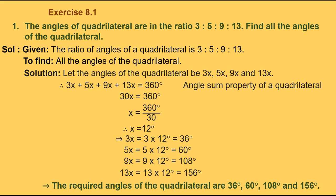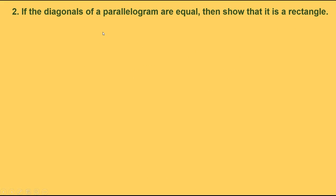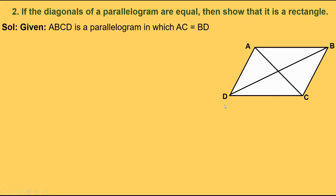Now moving on to the second problem. If the diagonals of a parallelogram are equal, then show that it is a rectangle. That is, in a parallelogram, if the diagonals are equal, then we need to show that it is a rectangle. Solution: given ABCD is a parallelogram in which AC equals BD — that is, diagonals are equal.